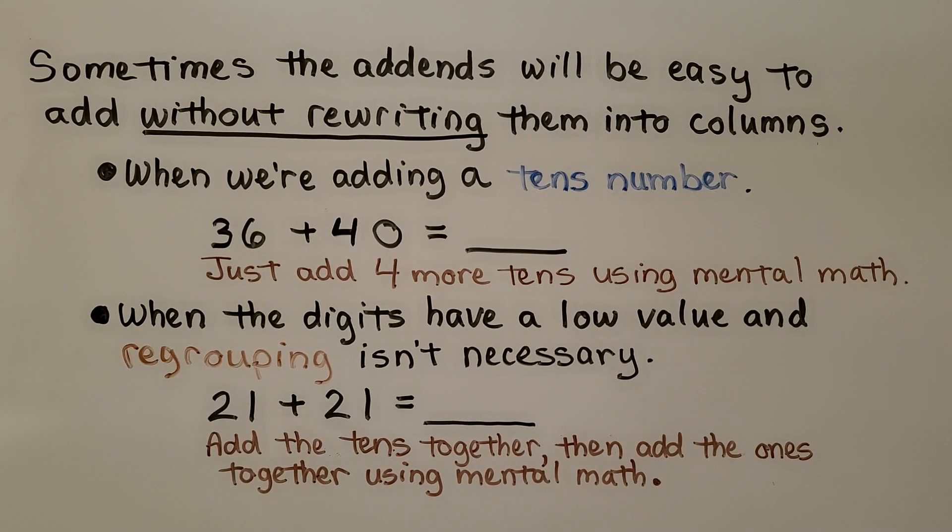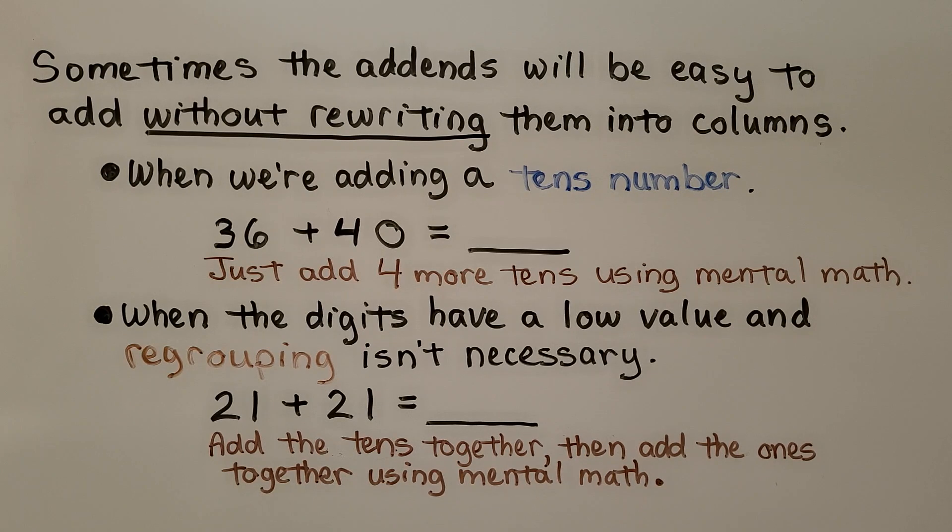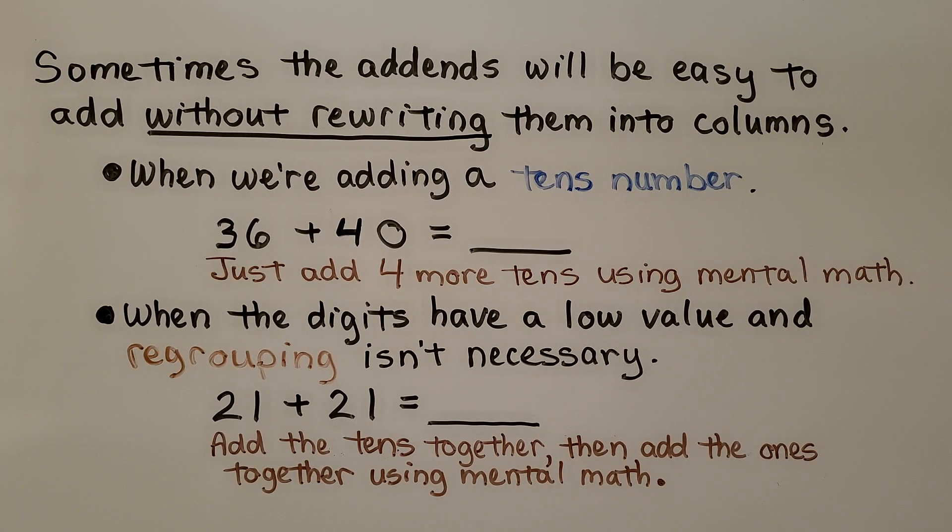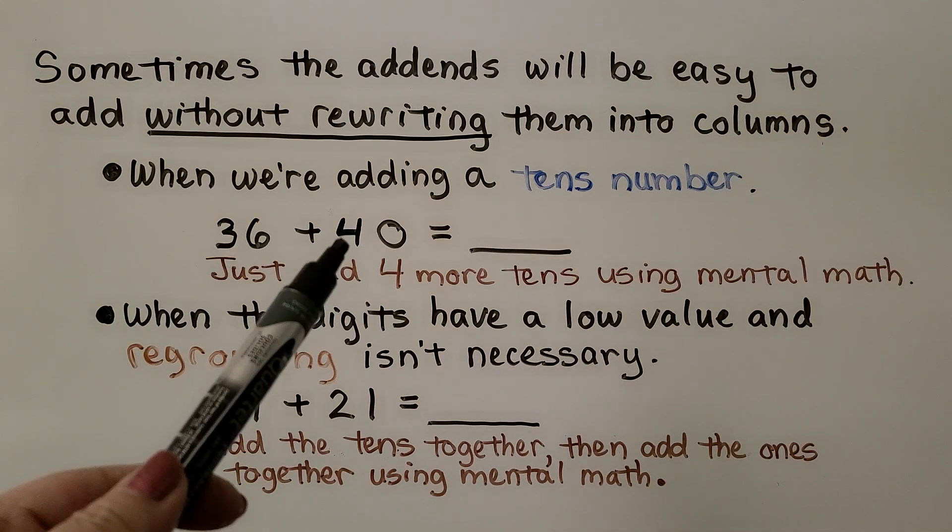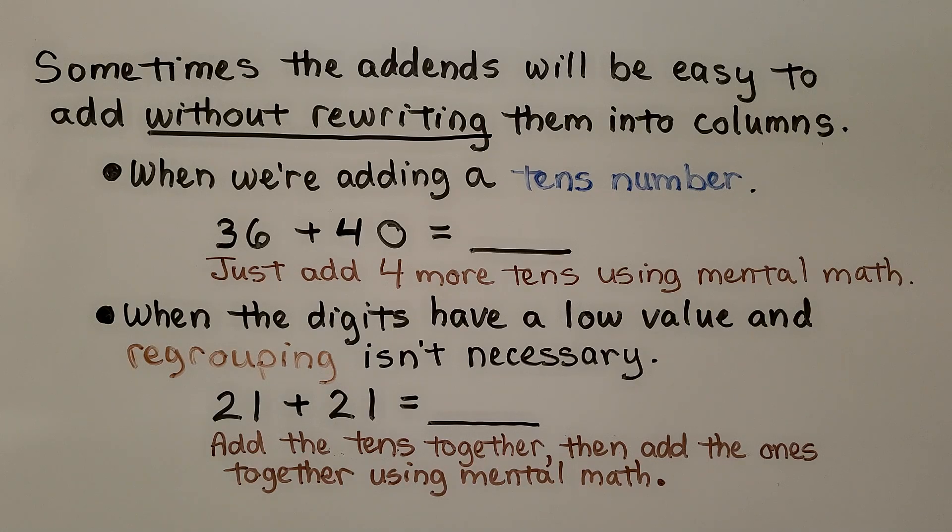Sometimes the addends will be easy to add without rewriting them into columns, like when we're adding a tens number. We have 36 plus 40. It's 4 tens. We can just add 4 more tens to the 36 using mental math.